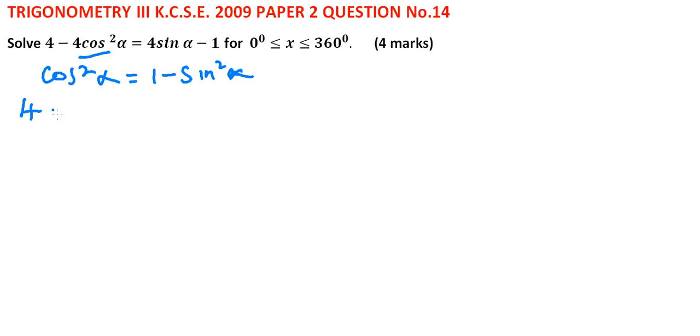We have 4 minus 4 into bracket. We now say it is 1 minus sin squared alpha, close the bracket, is equal to 4 sin alpha minus 1.